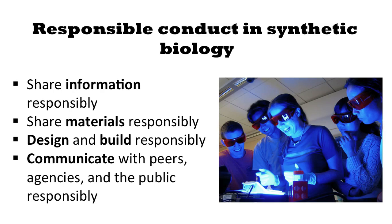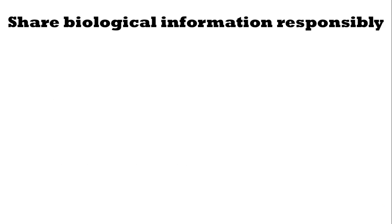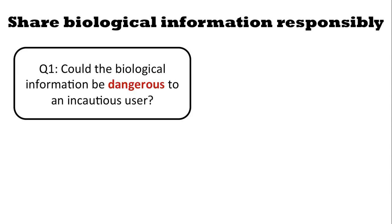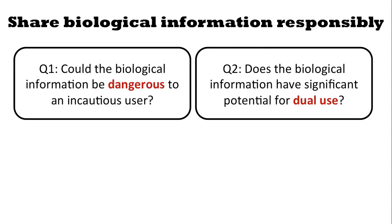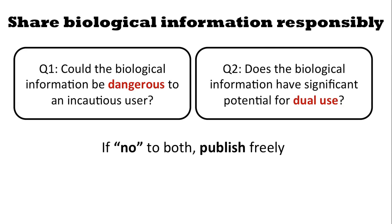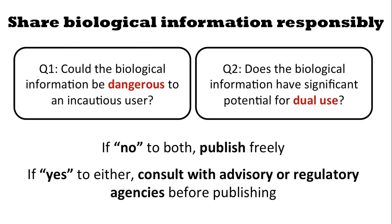Let's say that you're asked to share biological information, or you have a choice on whether to publish it or not. Ask yourself the following questions: Could the biological information be dangerous to an incautious user? Does the biological information have significant potential for dual use? If no to both, publish freely. If yes to either, consult with advisory or regulatory agencies before publishing.